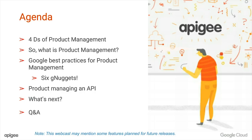Thanks so much, Vijay. Glad to be here. As PMs, this is going to be a fun topic for us to share what we know and what we can learn from our customers. We're thinking of going through in this order where we talk about the 4Ds of product management and specifically what that means for execution. Then we'll share some of the nuggets that Greg and I have learned over a period of time at Google and what Google PMs do really well. And then we'll get into very specifics around what does product managing an API really mean.